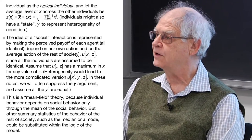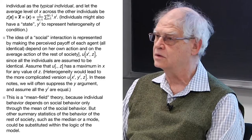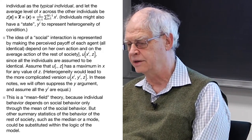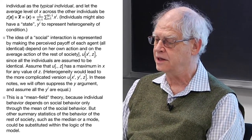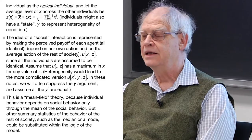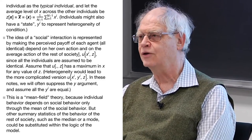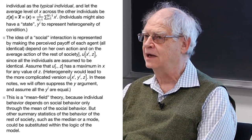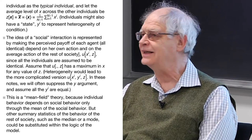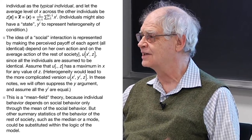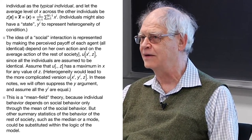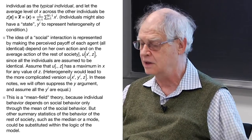The idea of the model is to make the perceived payoff of each agent depend on her own action and on the average action of the rest of society. So we're assuming that the payoff function u depends on x_i, the individual's action level, and z, what everybody else is doing. We'll arrange things so that the payoff has a maximum in the individual's action for any value of z. This is not trivial — I myself spent about four days on a part of the notes because I didn't make sure that the payoff function had this property and ended up with an unsolvable model.